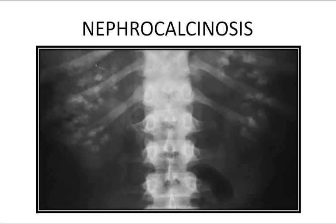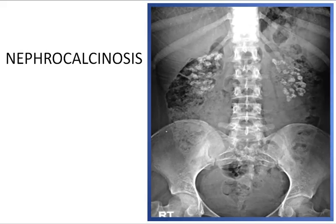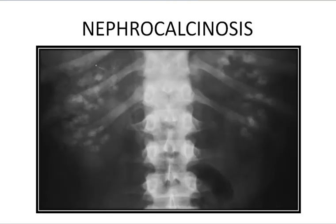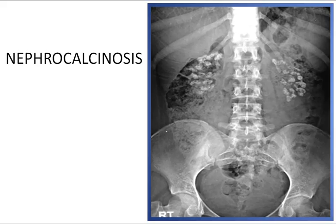Nephrocalcinosis is calcification of the renal parenchyma — usually bilateral and multiple. Nephrocalcinosis is seen in conditions such as hypercalcemia states, vitamin D toxicity, sarcoidosis, and tuberculosis. This is a case of bilateral adrenal calcification in a child. A radio-opaque shadow in the true pelvis unrelated to the ureter may prove to be teeth in a dermoid cyst of the ovary.